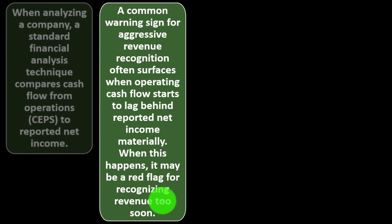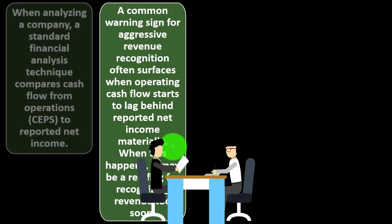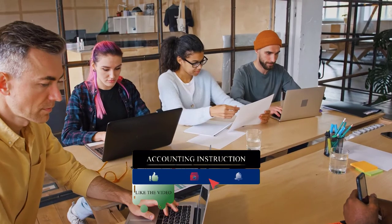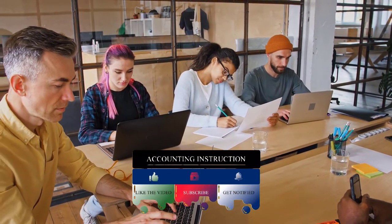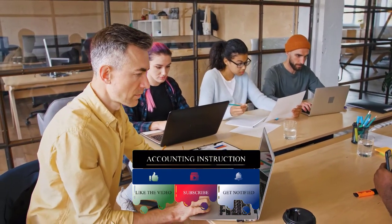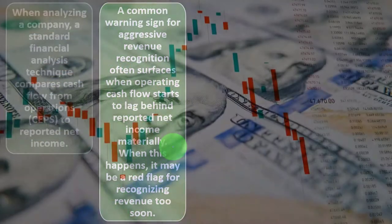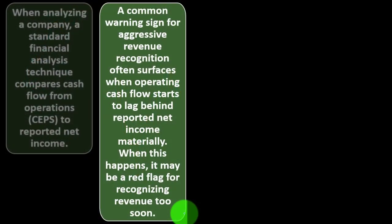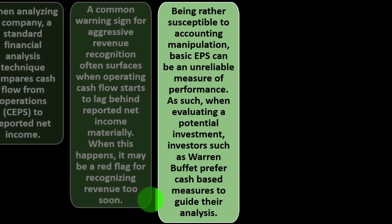When analyzing a company, a standard financial analysis technique compares cash flow from operations (Cash EPS) to reported net income. A common warning sign for aggressive revenue recognition surfaces when operating cash flow starts to lag materially behind reported net income. While the difference between cash and accrual methods is largely a timing difference that should even out over time, a consistent gap where accrual revenue is persistently higher than cash flow may suggest something unusual with the company's reporting.